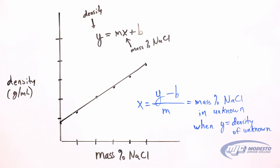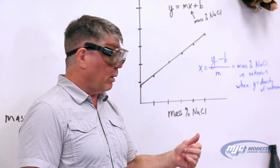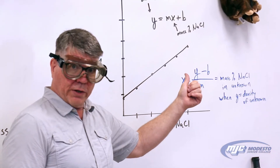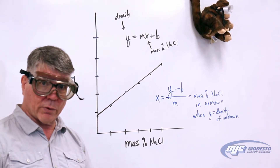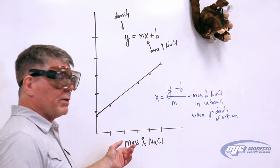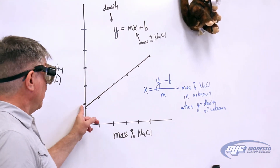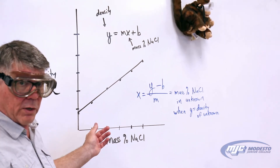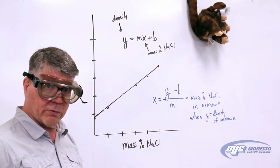You're going to have six points on your graph. You'll be able to calculate the density of the five solutions that you make up — solutions one, two, three, four, and five — as well as that of deionized water. Remember: in deionized water there is no sodium chloride, so the mass percent is zero, so that point will be at zero on the x-axis. But the density is not zero, it's going to be some number above zero. The density and mass percent of the other five solutions will be the remaining points.